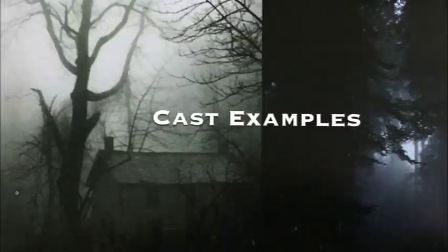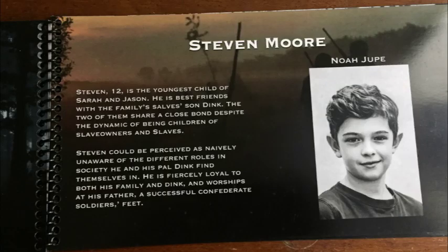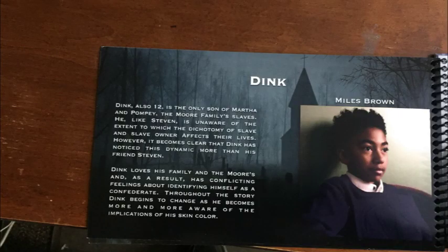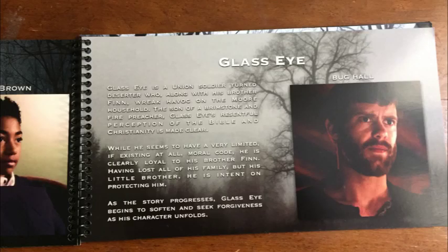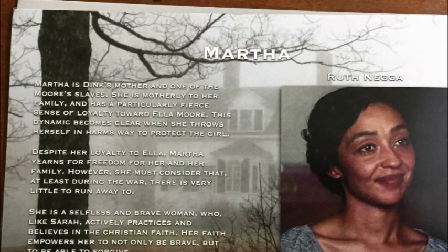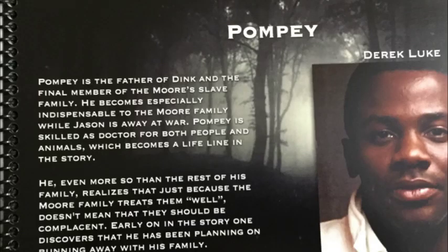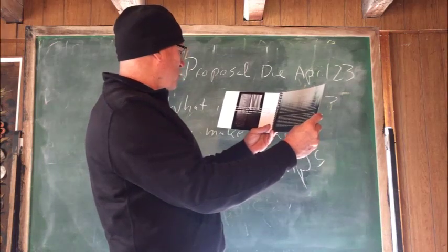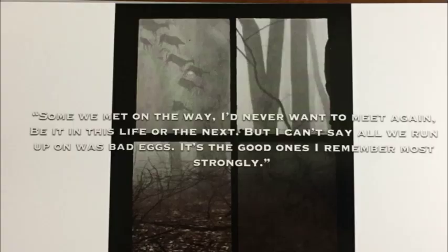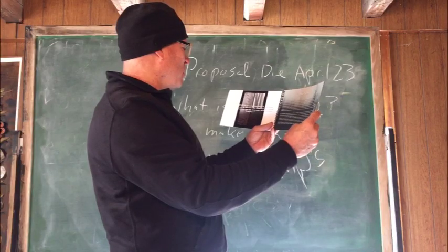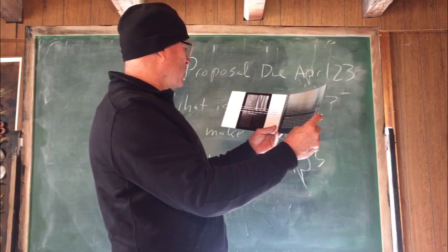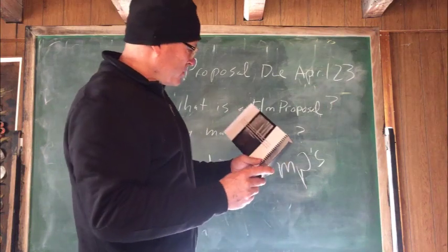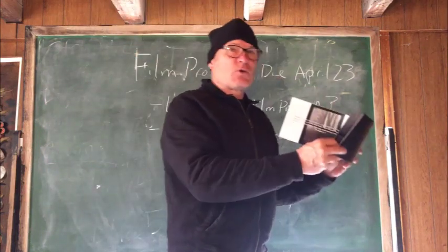So it's got danger and guns and Civil War. There are examples of the cast. It's got a nice image there — it looks like a window — and it's got a quote from the film: 'Some we met on the way I never want to meet again, but in this life or the next. But I can't say all we ran into was bad eggs — it's the good ones I remember most strongly.' That's actually one of my lines of dialogue. I kind of wrote the script.